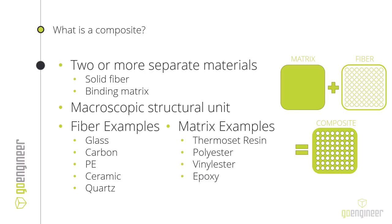Some common examples of fiber materials — those strong, rigid materials that give composites their big benefits. A lot of times those fibers are glass, carbon, polyethylene (PE), and ceramic or quartz, which are also common in certain applications. For the matrix material, it's usually something like a thermoset resin, polyester, or vinyl ester, and epoxies are popular as well.